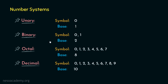Coming to binary, we use the symbols 0 and 1 — that is, two symbols — and therefore the base is 2. Then in octal, we have got the symbols 0 to 7, that is, eight symbols. Thereafter, in case of decimal, the symbols 0, 1, 2, so on till 9 are used. Basically there are 10 symbols here, and therefore the base is 10.